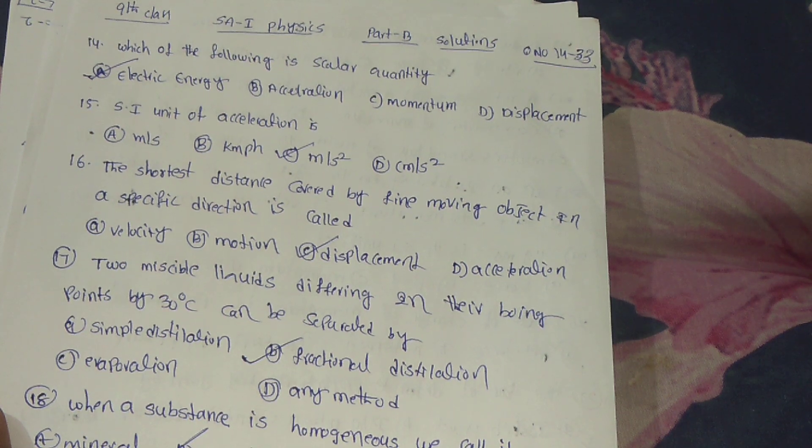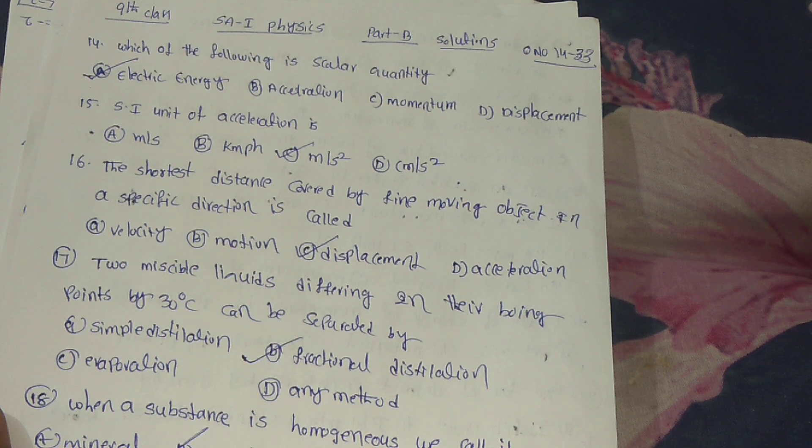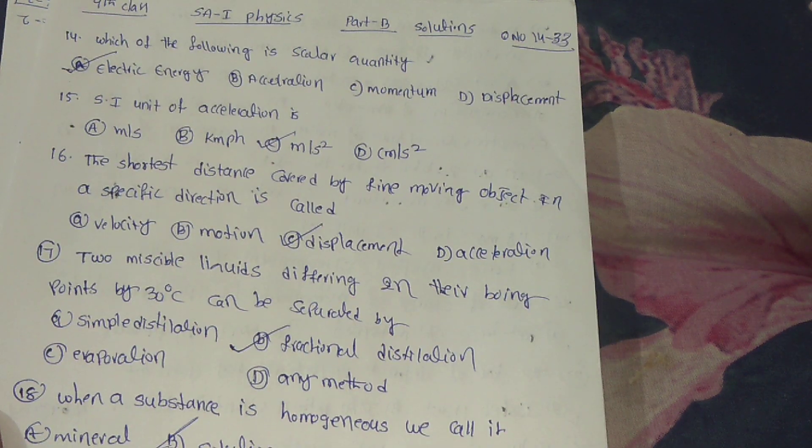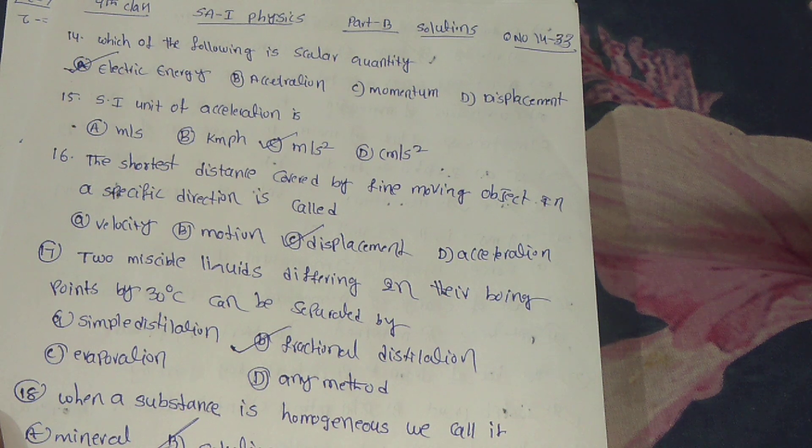15th one: SI unit of acceleration is? The answer is C, meter per second square.